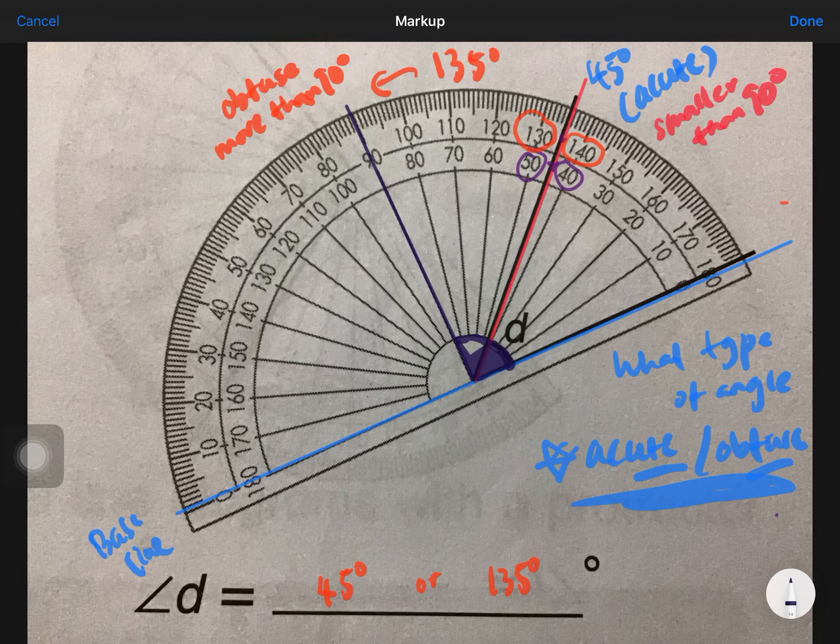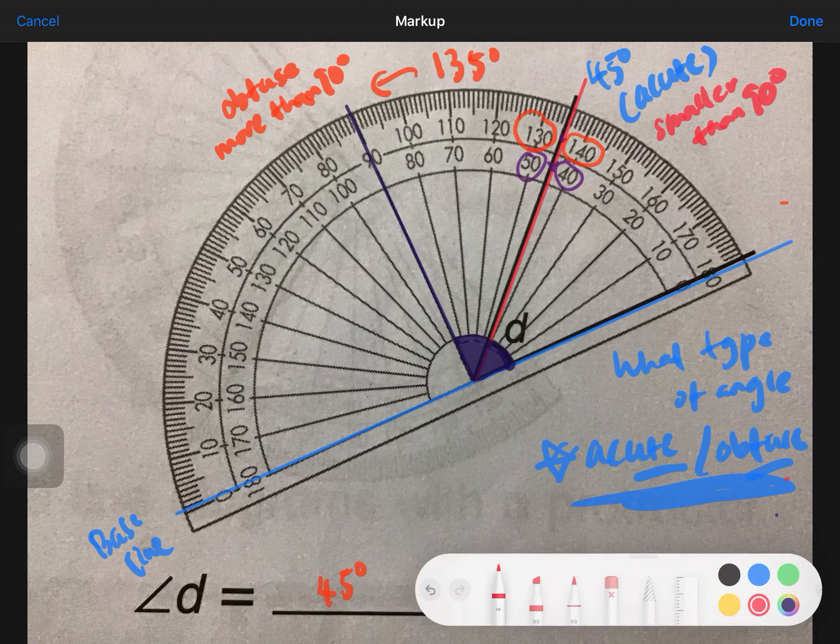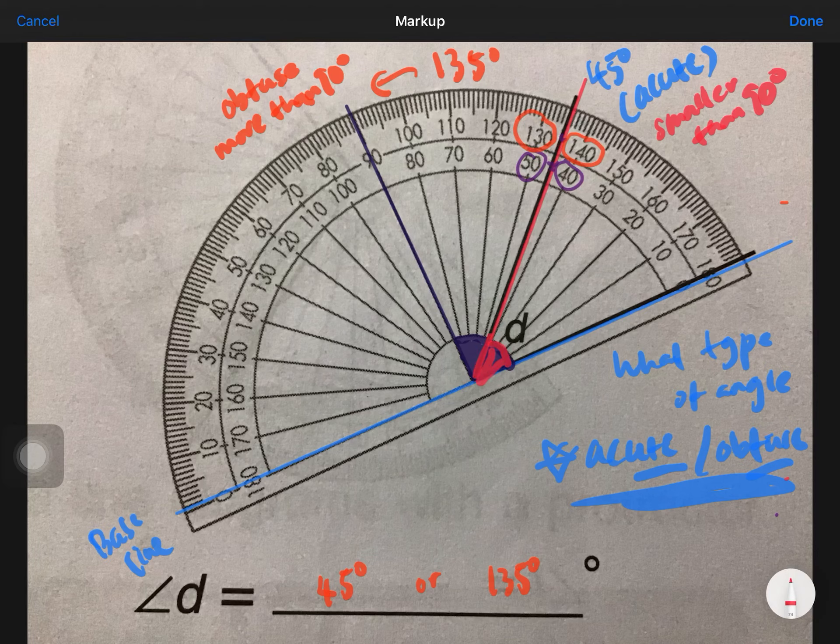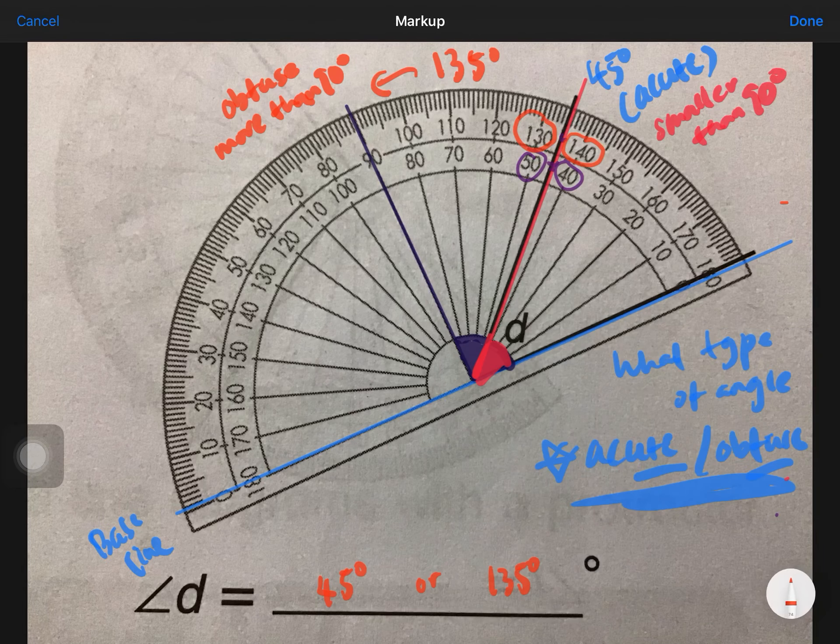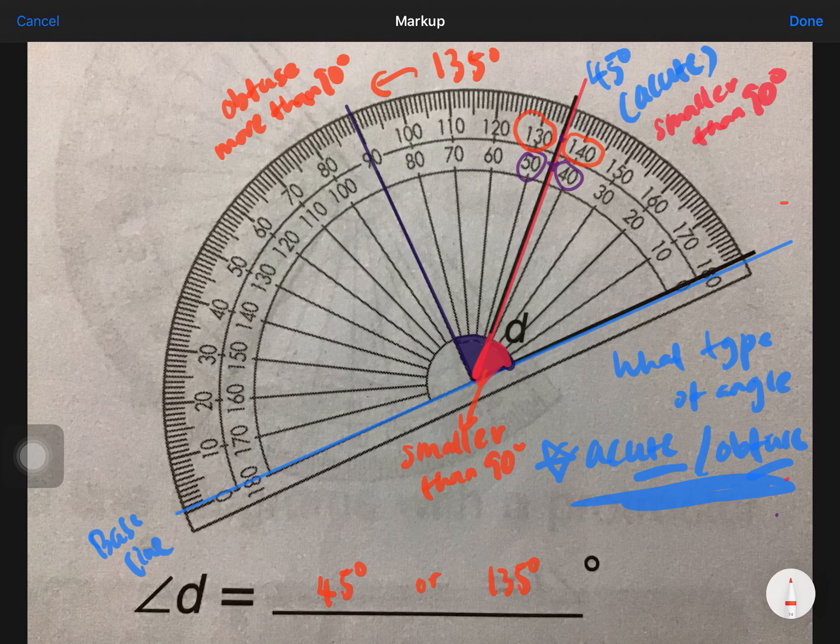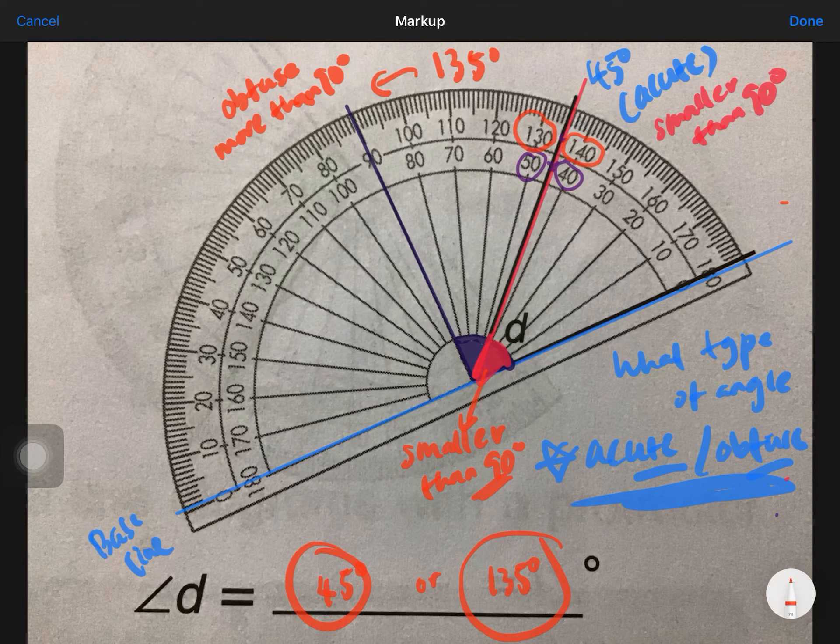And what about angle d? I'm going to choose. Angle d is until here, right? So this is angle d. Is it smaller than 90 or more than 90? It is—look at the color—it is smaller than 90 degrees, right? So what's the answer? Is it 45 degrees or 135 degrees? Please decide now in the next question.